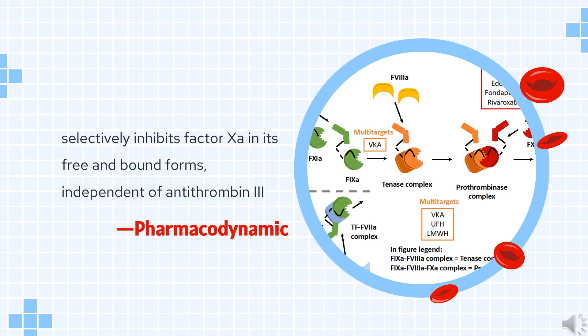Pharmacodynamics: Apixaban selectively inhibits factor XA in its free and bound forms, independent of antithrombin 3. Apixaban also inhibits prothrombin. These effects prevent the formation of a thrombus.